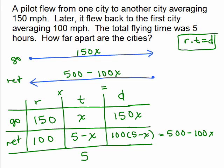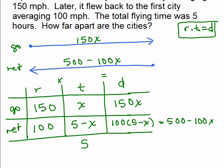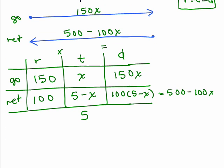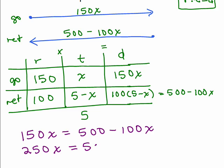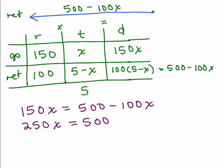So now by looking at the picture, these are the same length, so I get an equation by making them equal to each other. So 150x equals 500 minus 100x. I'm going to add 100x to both sides, get 250x equals 500 and divide by 250, we get 2.